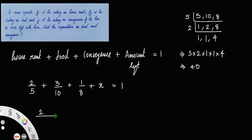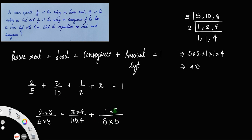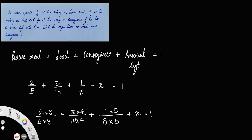For the fraction 2/5, to make the denominator 40 you multiply by 8, so the numerator also becomes 16. For 3/10, multiply by 4 to get 12/40. For 1/8, multiply by 5 to get 5/40. So the equation becomes: 16/40 + 12/40 + 5/40 + x = 1.